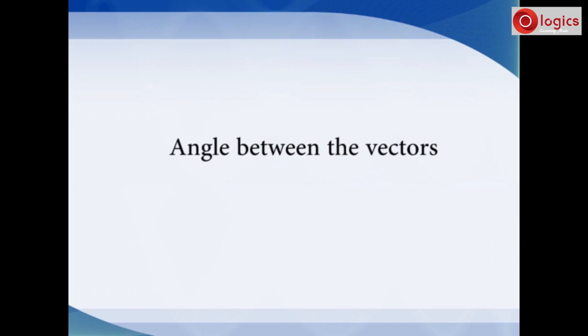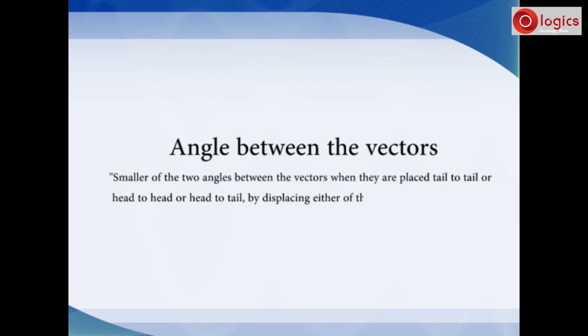On conclusion, we can define angle between the vectors as smaller of the angle between the vectors when they are placed tail to tail, or head to head, or head to tail, by displacing either of the vectors parallel to itself.